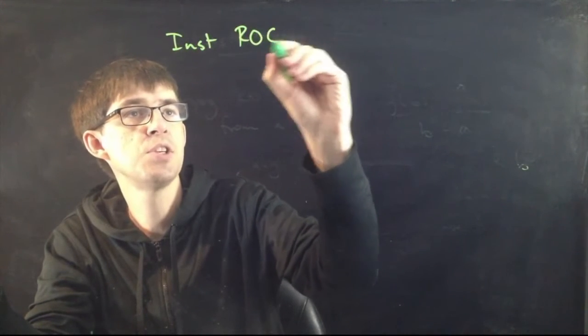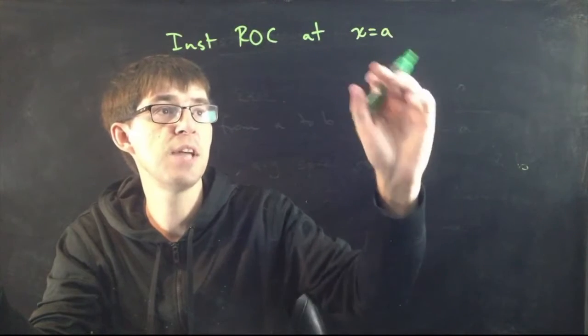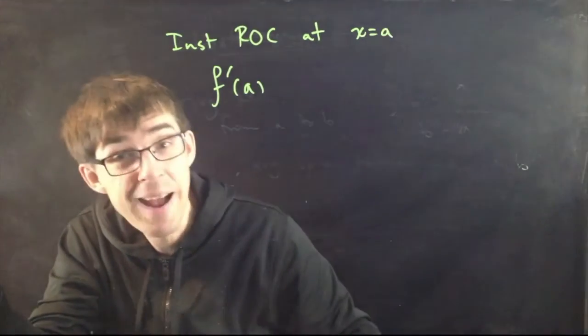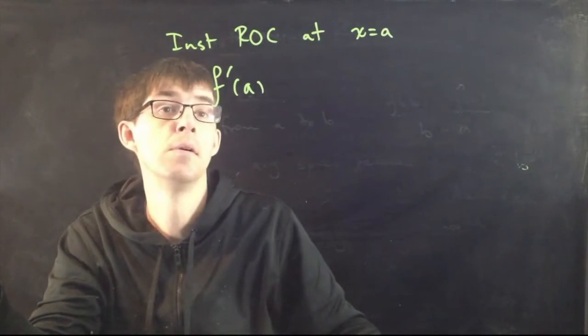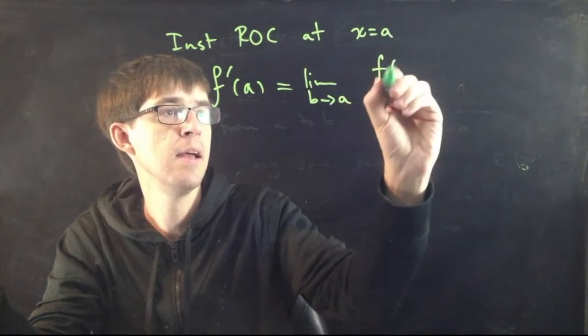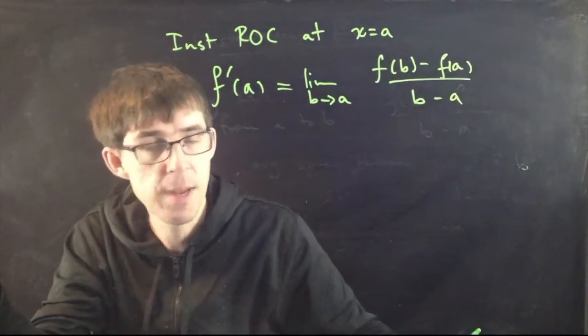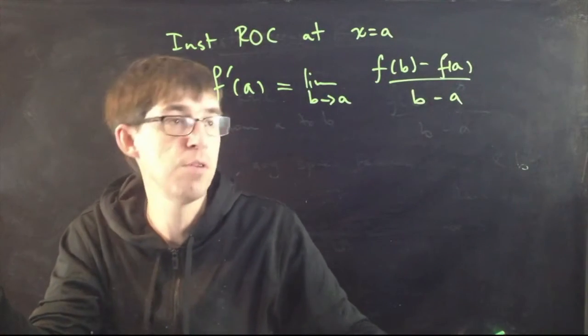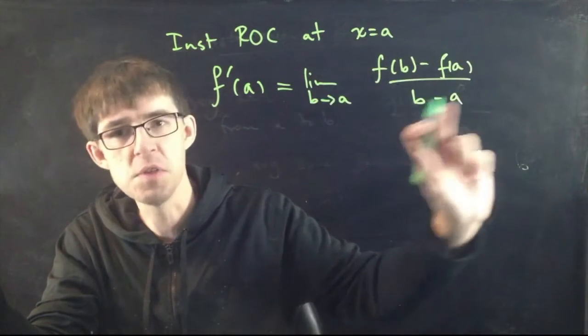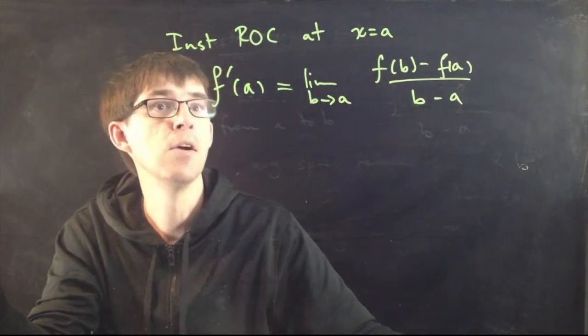The instantaneous rate of change at x equal a. This you think of as like a specific point in time. The instantaneous rate of change at x equal a is written like this. So this right here is the function. That guy is a prime. It's a little apostrophe, but we call it prime. So this, we say f prime of a, and the formula is this. Lim b goes to a. F of b minus f of a divided by b minus a. So this here is the formula for the average rate of change from a to b. But I'm considering that when the b is like super close to the a.